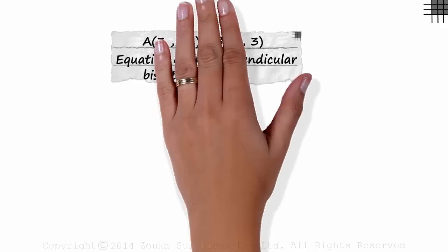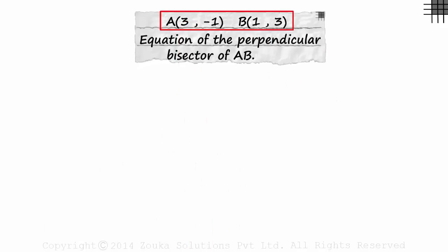In this example, we are given the coordinates of A and B and have been asked to find the equation of the perpendicular bisector of AB. Pause the video and try finding the equation.